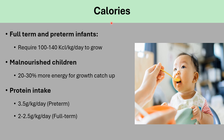Daily requirements of calories in full-term and pre-term infants: the requirement is 100 to 140 calories per kilogram per day to grow. In malnourished children, they require more calories than normal children, which is 20 to 30% more energy for growth catch-up. The requirement of protein intake is higher in pre-term infants, at 3.5 grams per kilo per day. In full-term infants it is 2 to 2.5 grams per kilo per day.